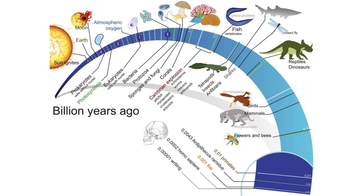Earth is 4.2 billion years old. Earth's history is divided into several time periods that are classified by a change in Earth's environment, evolution of life forms, and major geological changes. This is called the geologic time period. Geological time periods are divisions of Earth's history used by geologists and paleontologists to categorize and study vast expanses of time since the Earth's formation.